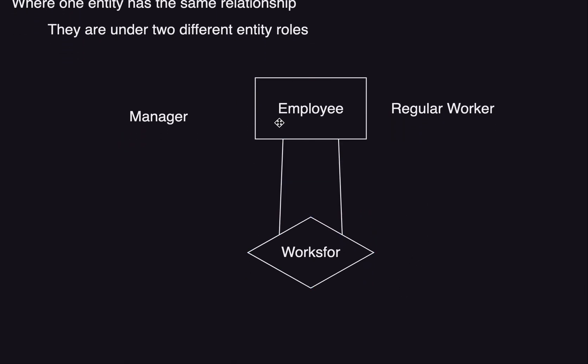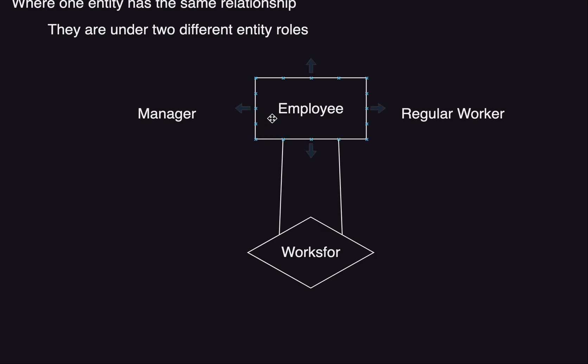I've drawn up a little section of an ER diagram here where I've said the manager and a regular worker are both employees. So they both come under the entity of an employee and they still work for something. This is a recursive relationship — both the manager and a regular worker could both work for a project.